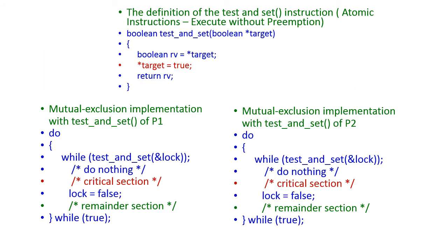Now let us see how process 1 and process 2 will use the test-and-set condition for executing the critical region in a sequential manner. Initially, the target value is false and the return type should also be false. Once the function is called, the target value will be changed to true. If process 1 wants to execute the critical region first, the while condition will become false.